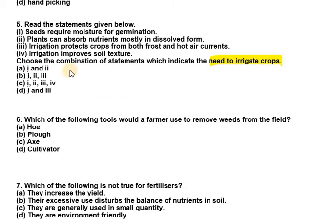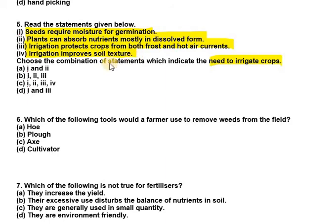Seeds require moisture for germination — that's right. Plants can absorb nutrients mostly in dissolved form — again right. Irrigation protects crops from both frost and hot air currents — that's right. Irrigation improves soil texture — that's also right. So the answer is option C, meaning all the statements are correct.